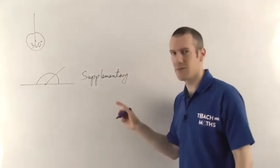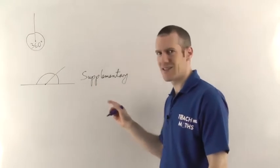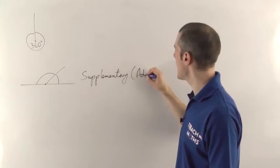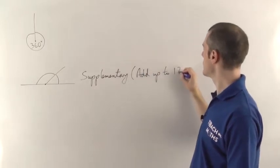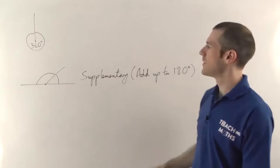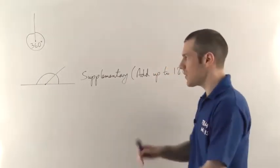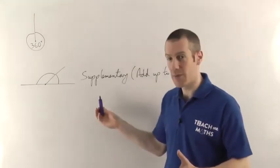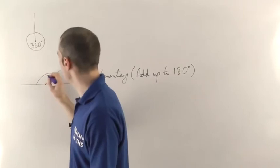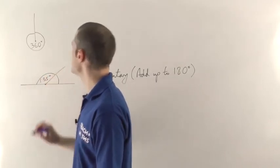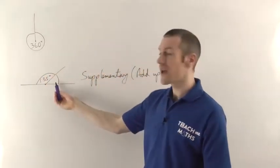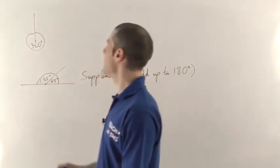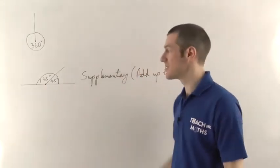You probably don't need to memorise the definition, but at least be aware that it exists. Supplementary means that two angles add up to 180 degrees. So these two angles on a straight line would be supplementary — but any pair of angles in any situation that add up to 180 degrees would be supplementary. So in this case, if one angle is 135 degrees, you can work out the other angle is going to be 45 degrees, because those two need to add up to 180 degrees.